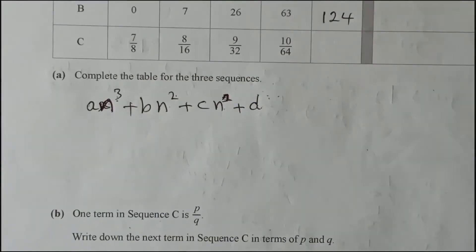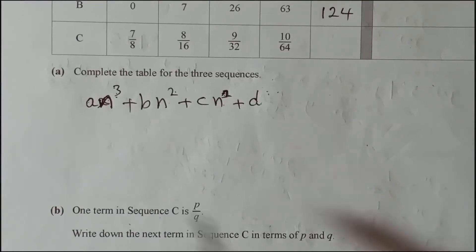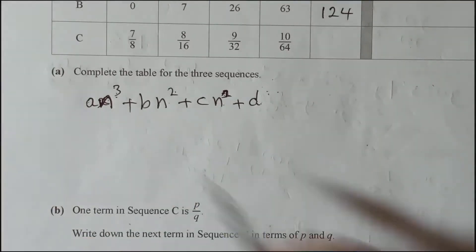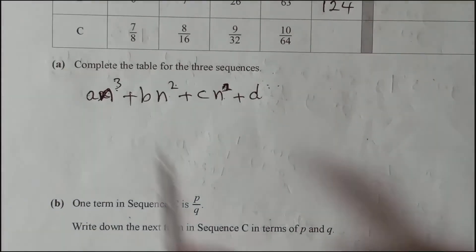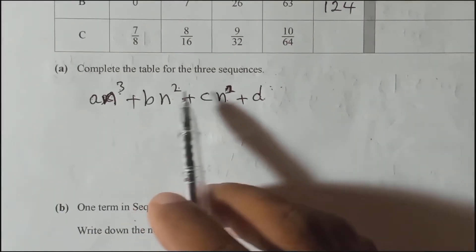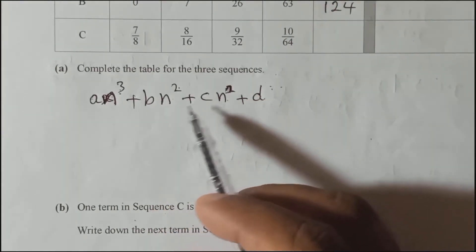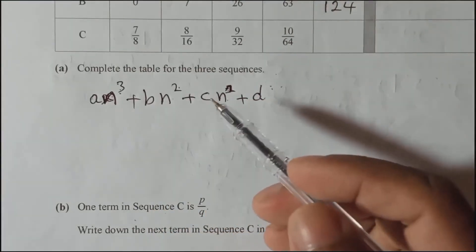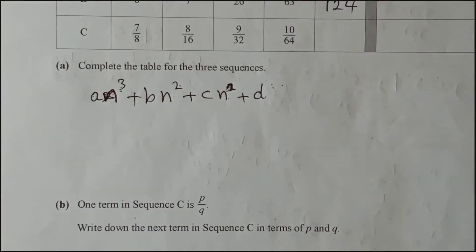Once you solve these four equations, you can find A, B, C, D. I will show you the working now. Using what we wrote, let's define each value step by step.